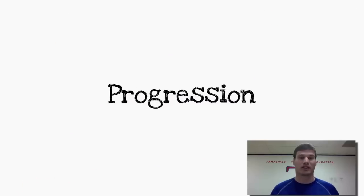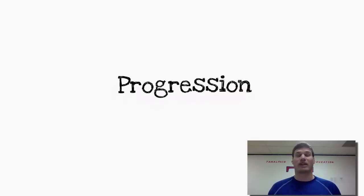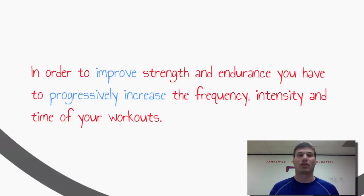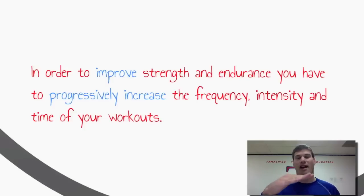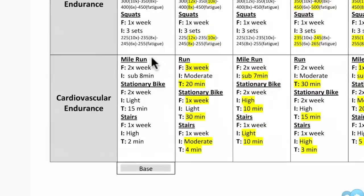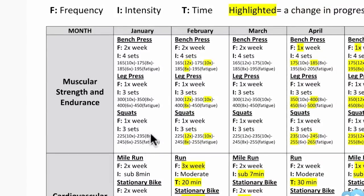The next principle is progression. Progression is pretty self-explanatory: in order to improve strength and endurance, you have to progressively increase the frequency, intensity, and time of your workouts. For example, if I just go out and run a mile every single day, that is some exercise, but over time my body is going to start to plateau and I won't get any benefit from it. Let's look at this chart starting with the month of January as our base workout.